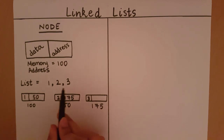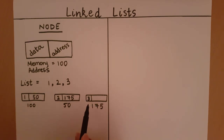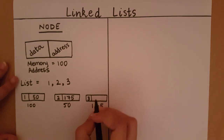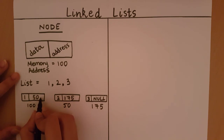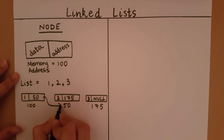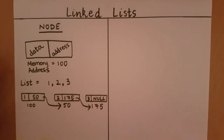Now we are at node number two. The data element is two and the address of the next node is 175. Using this information we can go to the next node. Finally we reach the last node with element three. When we reach the last node and there is no successor, what we fill in the address block is null. So from the very first node, using the address block data we can be redirected to the next node, then to node three and so on. By now you should understand why a node has both a data block and an address block.